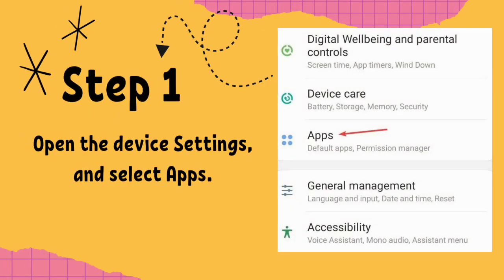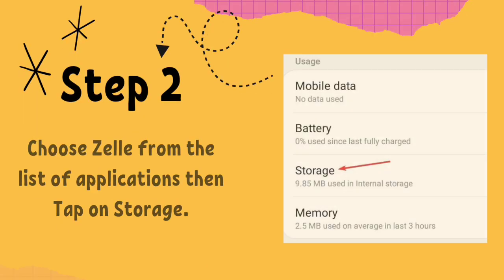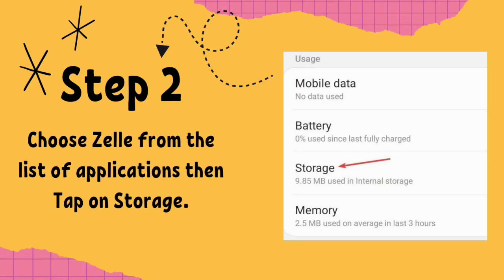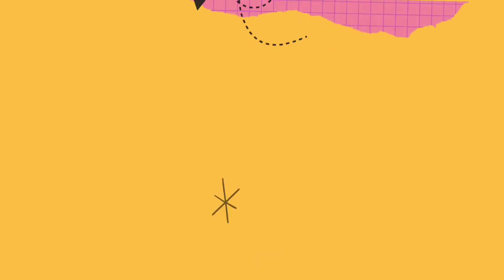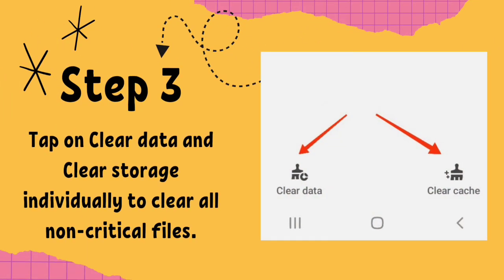Step 1: Open the device settings and select Apps. Step 2: Choose Zelle from the list of applications, then tap on Storage. Step 3: Tap on Clear Data and Clear Storage individually to clear all non-critical files.